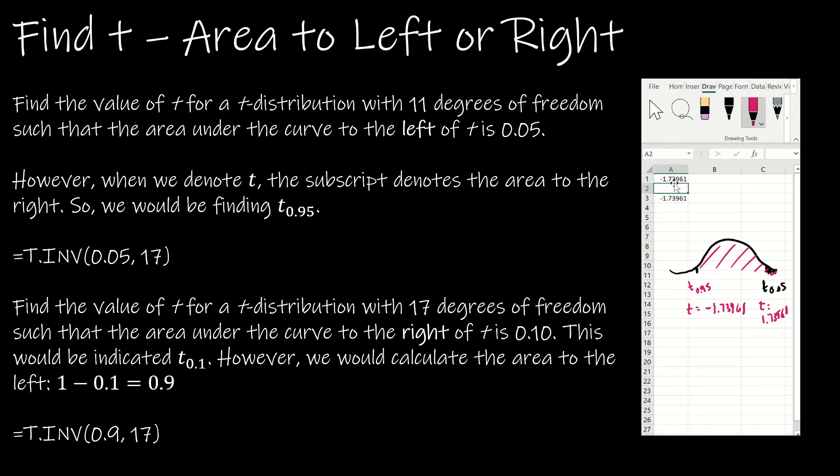In Excel, we need the area to the left. So if there's 10% to the right, there's 90% to the left. That's what I'm going to use: t dot inverse, then the 90% to the left, and the degrees of freedom is 17. That's going to give me my solution.